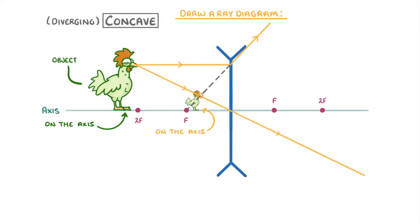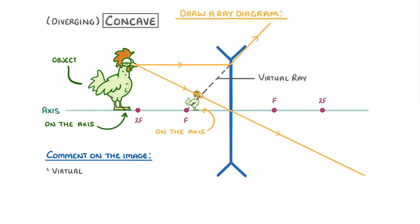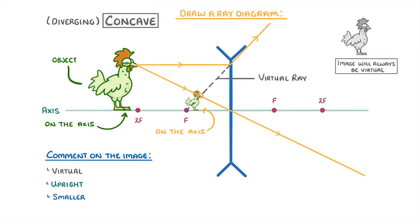In the exam, once you've drawn your ray diagram, you might also have to comment on the image. So in this case, we would say that it's virtual, because one of the rays used is a virtual ray. It's upright, because it's standing the right way up. And it's smaller than the object. If you're using a concave lens like this, then the image will actually always be virtual.